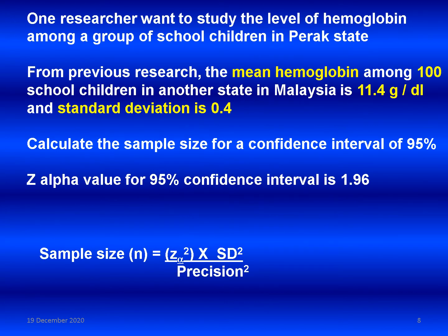We can go through another scenario. One researcher wants to study the level of hemoglobin among a group of school children in Perak state. From previous research, the mean hemoglobin among 100 school children in another state in Malaysia is 11.4 gram per deciliter, and the standard deviation is 0.4. We collected mean, standard deviation, and sample size from previous research. Calculate the sample size for a 95% confidence interval.